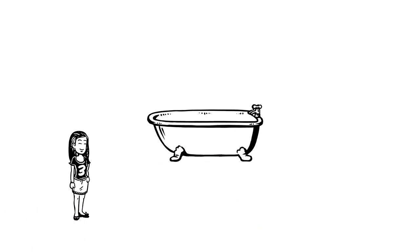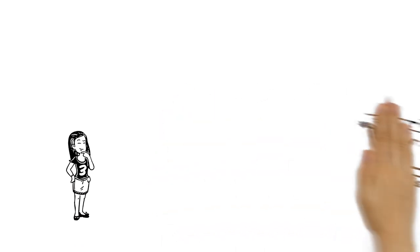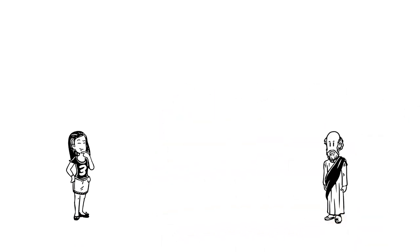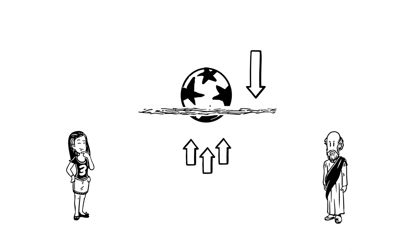Imagine a bath, full to the brim with water. If you drop a ball into it, it floats. Archimedes discovered that any object that rests on water is affected by an upward force opposite to gravity. This force is called buoyancy or upthrust.